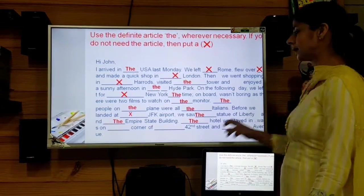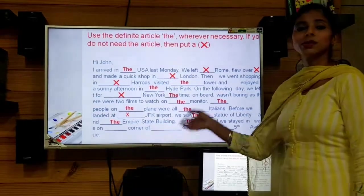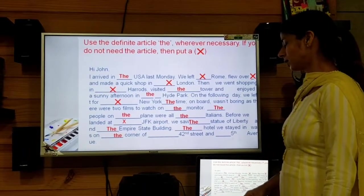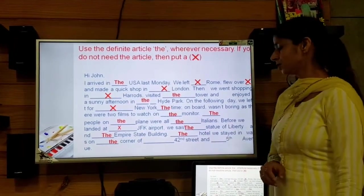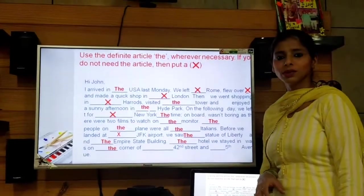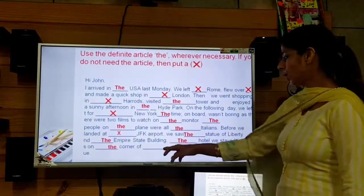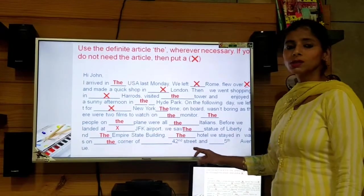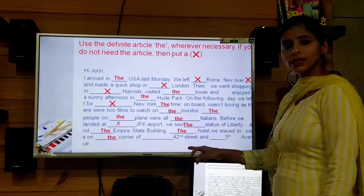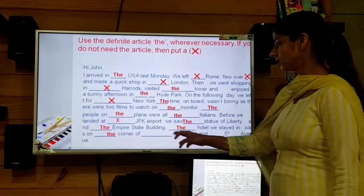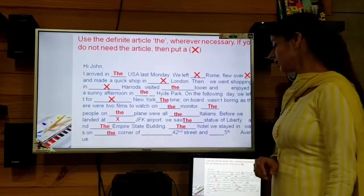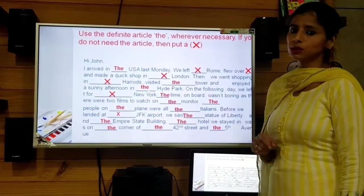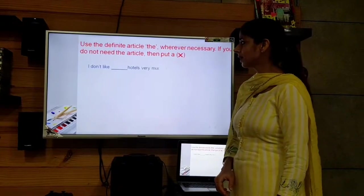Continuing: 'the hotel we stayed in was on ___ corner of' — we are mentioning which corner, so we put 'the'. Then '___ 42nd Street' — when we have a numbered street, the rule is to add 'the' before it: the 42nd Street. And '___ Fifth Avenue' — again we use 'the' before the ordinal number: the Fifth Avenue.